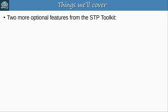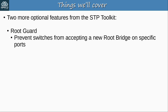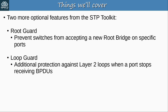Here's what we'll cover: two more optional features from the STP Toolkit. RootGuard, which can be used to prevent switches from accepting a new root bridge on specific ports, and LoopGuard, which provides additional protection against layer 2 loops when a port stops receiving BPDUs. We'll cover what these tools do, how to configure them, and where to configure them in a LAN.